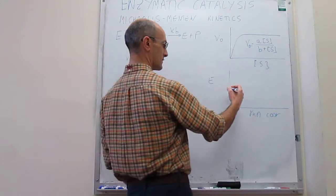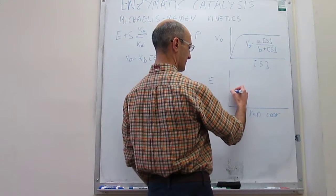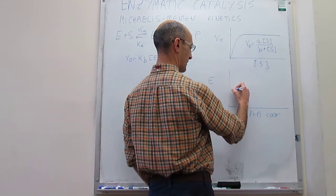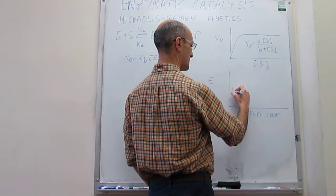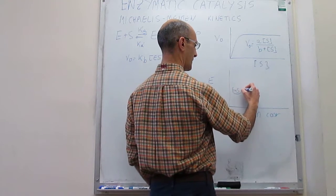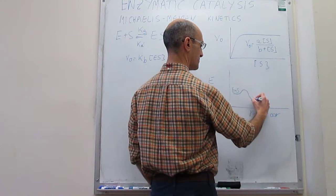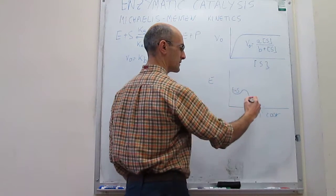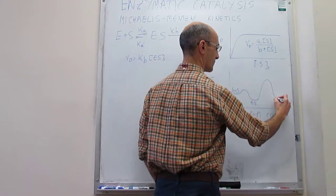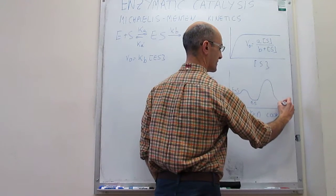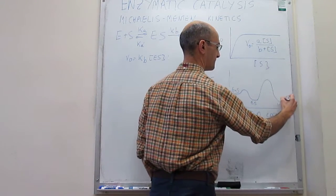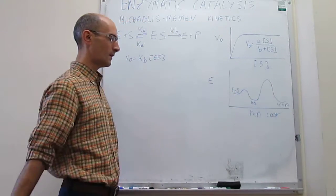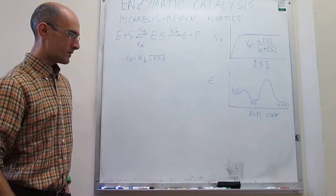The energy diagram looks something like this. You have enzyme plus substrate that binds to generate the enzyme-substrate complex, and then the second reaction generates products.